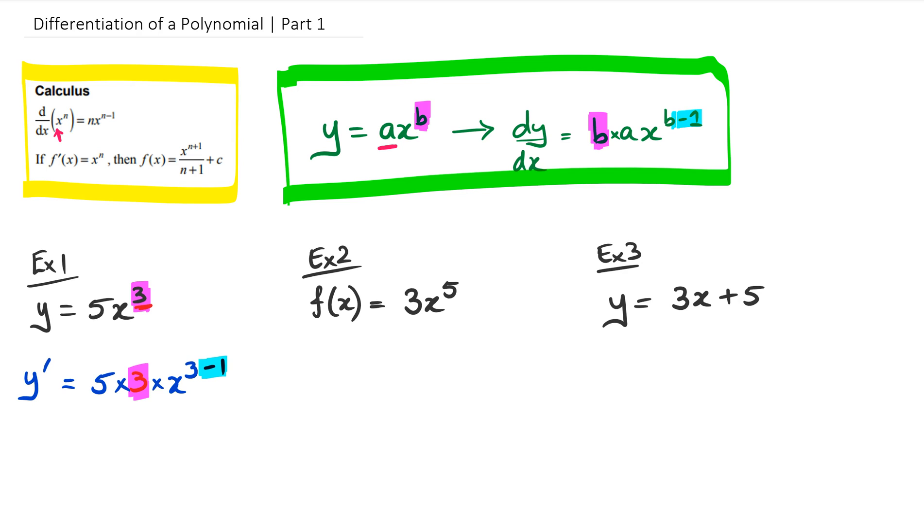So now we need to simplify this. So when we're going to simplify this, we're going to get 5 times 3, which is 15. And then x to the power of 3 minus 1 is 2. So that's example 1.